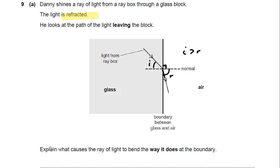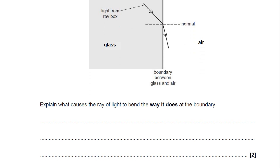Now, you're asked to explain what causes the ray of light to bend the way it does at the boundary. So why does the angle of refraction increase? We say it's bending away from the normal. Think about what you know about refraction. It's a two mark question. So have a little go at trying to explain that.